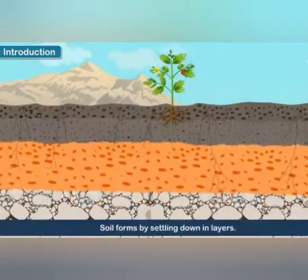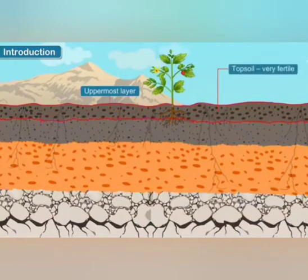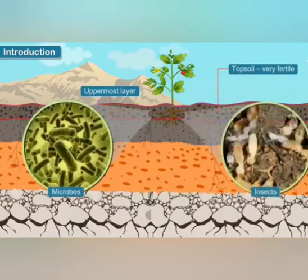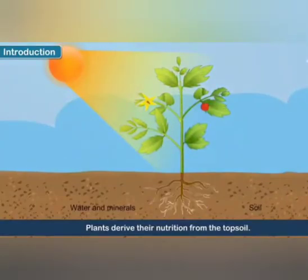Soil forms by settling down in layers. The uppermost layer is the topsoil, which is very fertile. It contains microbes and insects. Plants derive their nutrition from the topsoil.